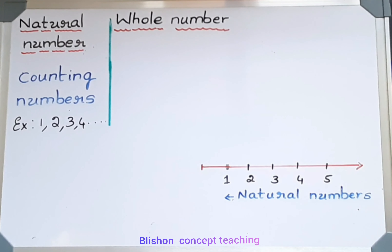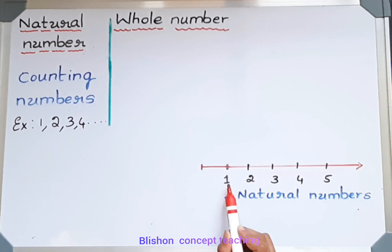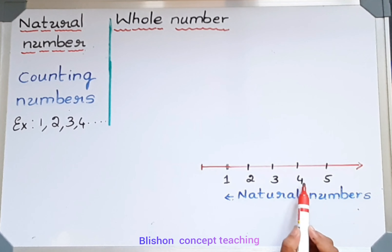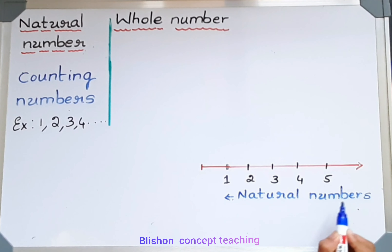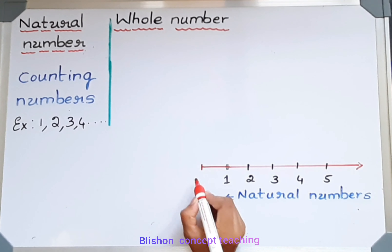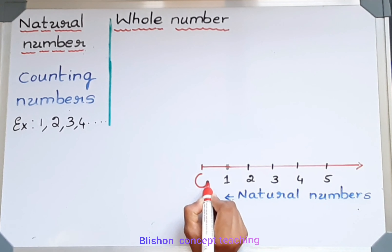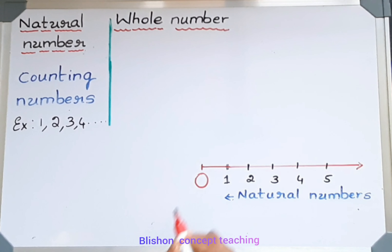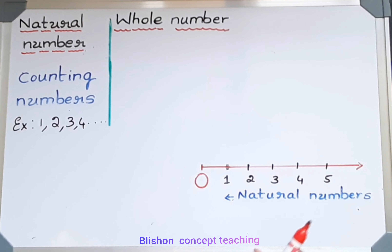You know that the counting numbers are called natural numbers — that is one, two, three, four, and so on. Now, for the family of natural numbers, if I add an extra member, that is zero, then it will become whole numbers.